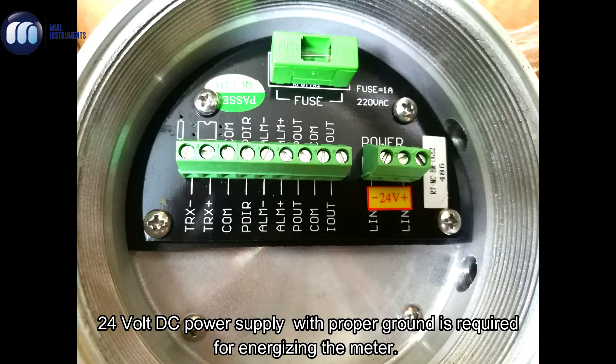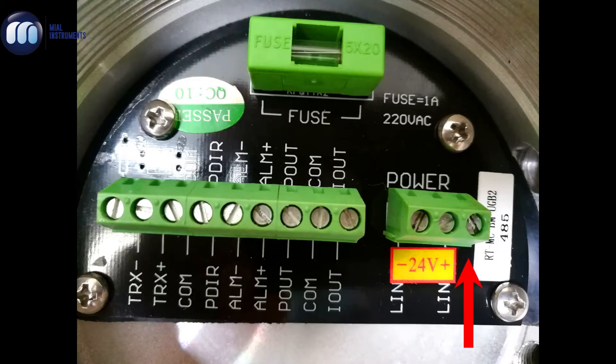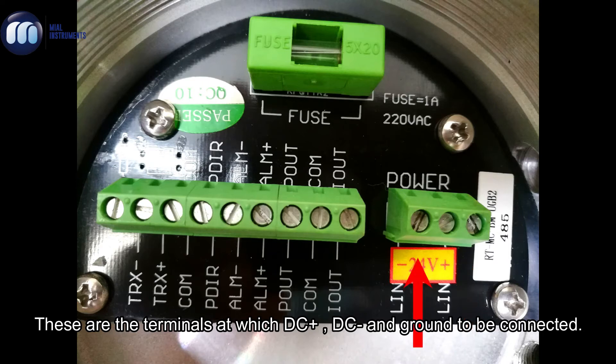24 volt DC power supply with proper ground is required for energizing the meter. These are the terminals at which DC plus, DC minus, and ground are to be connected.